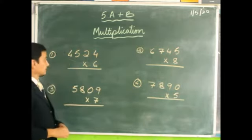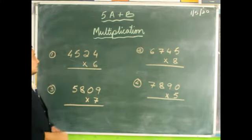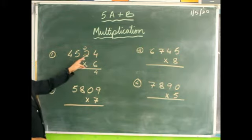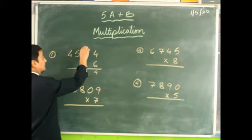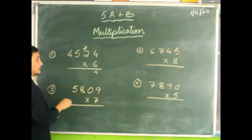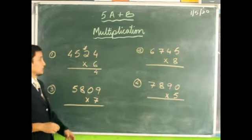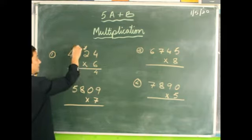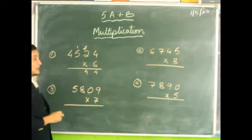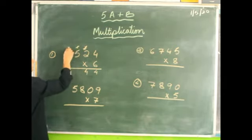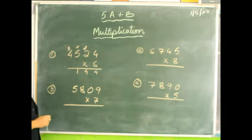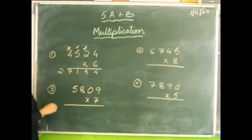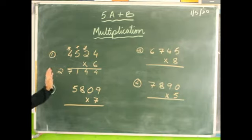Let's begin. Six fours are 24, write 4 carry 2. Six twos are 12; 12 plus 2 is 14, write 4 carry 1. Draw a line through the carrying number so you know you've counted it — most of the time children forget to add the carried number. Six fives are 30; 30 plus 1 is 31. Six fours are 24; 24 plus 3 is 27. This is how you should do the sums in your exercise book.